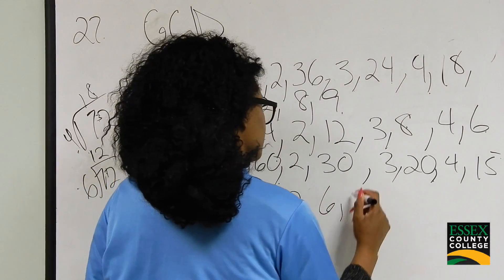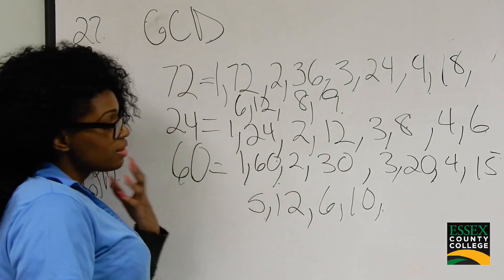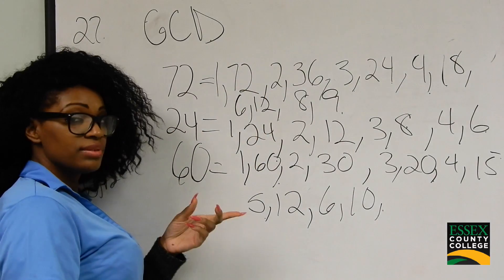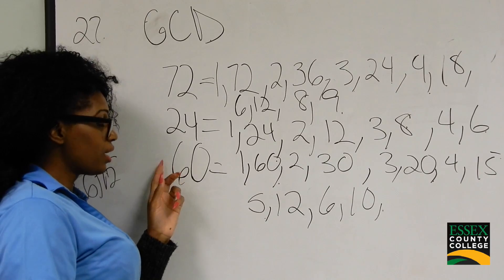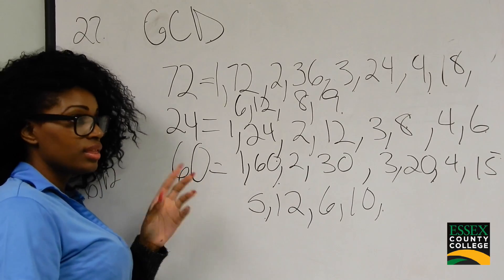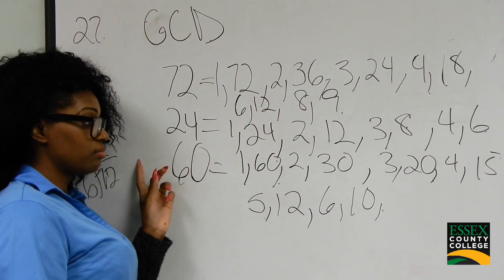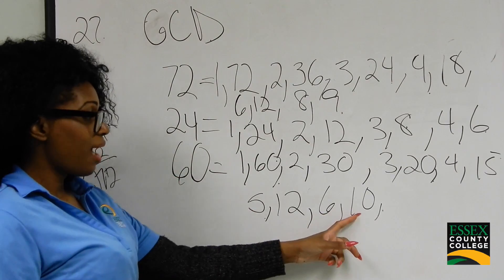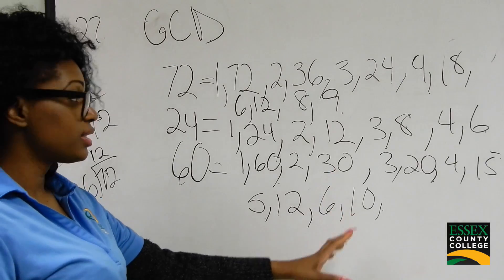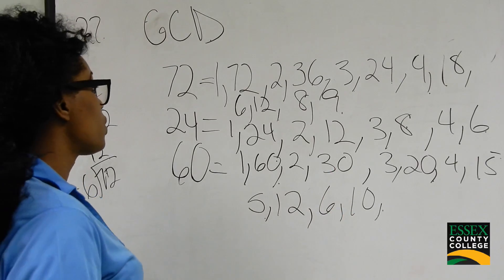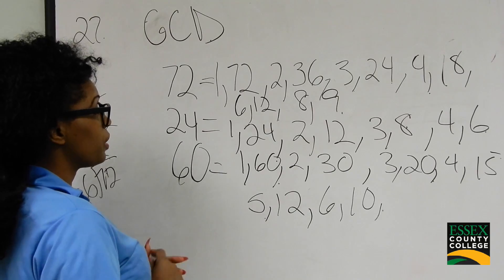Can 6 go into 60? Yes — 6 and 10 are factors of 60. Can 7 go into 60? No. Can 8 go into 60 evenly? No. Can 9? No. But 10 can — 10 and 6 make 60. Now let's look at all of our factors and see what's the greatest common factor between all of these numbers.